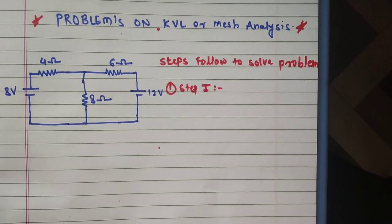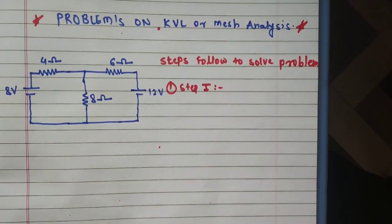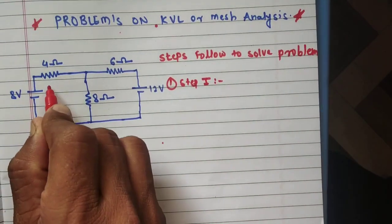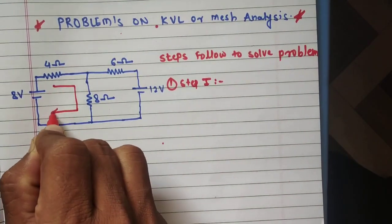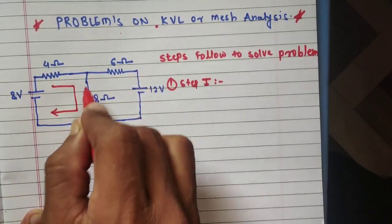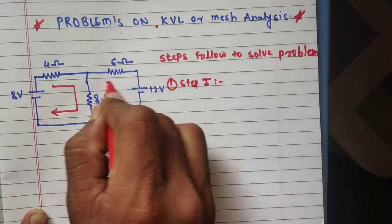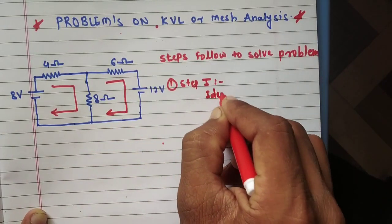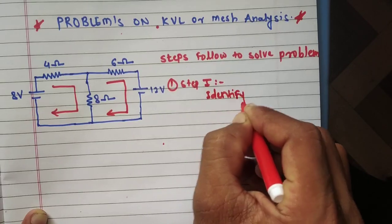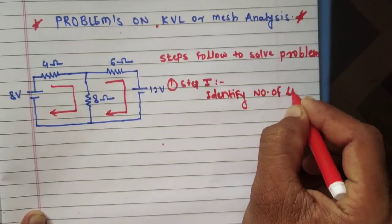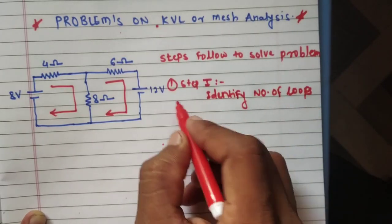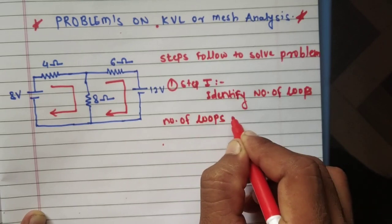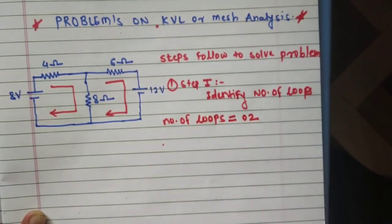Step one is to identify the loops. A loop is any closed path of electrical branches. So here is a closed path, here is one loop, here is another loop. So how many loops? There are two loops.